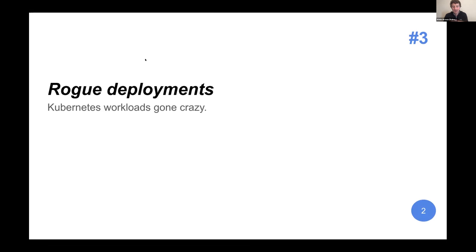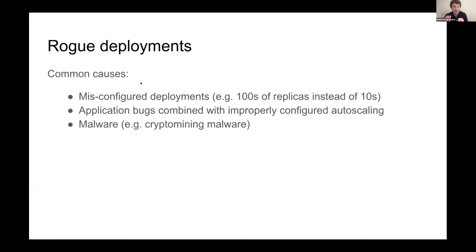Number three is a catch-all: workloads behaving in unexpected ways. Common examples include an application bug — we've seen a pretty recent story of essentially an infinite loop that auto-scaled resources costing tens of thousands of dollars. We also had a user who had a Bitcoin miner installed in their Kubernetes cluster, and that plus auto-scaling led to a huge burst in resource consumption. These are long-tail unexpected events that, even in a relatively short time, can be fairly costly.